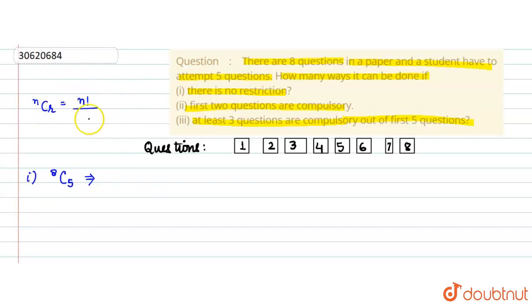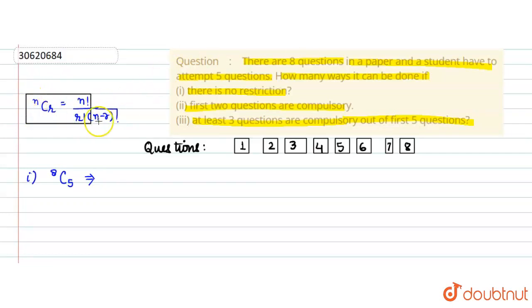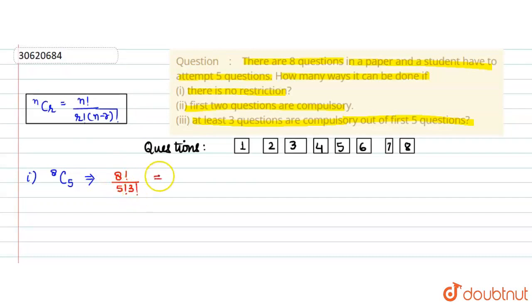We use the combination formula: nCr = n! divided by (r! into (n−r)!). Using this formula, we can solve 8C5. That is the first part of our answer. So we have factorial 8 upon factorial 5 into factorial 3.